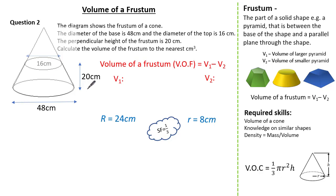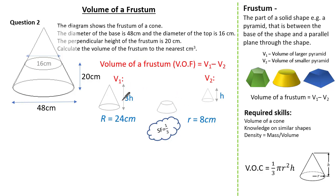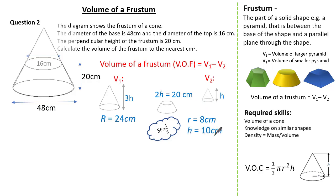Let's use our knowledge on the height of the frustum. Let's label the height of the smaller cone as h. Therefore the height of the larger cone must be 3h, given what we know about the scale factor. The height of the frustum is 3h minus h which gives us 2h. We know 2h equals 20 cm, so we can identify h to be 10 cm. Now we know h is 10 cm, so the height of our larger cone is 30 cm.